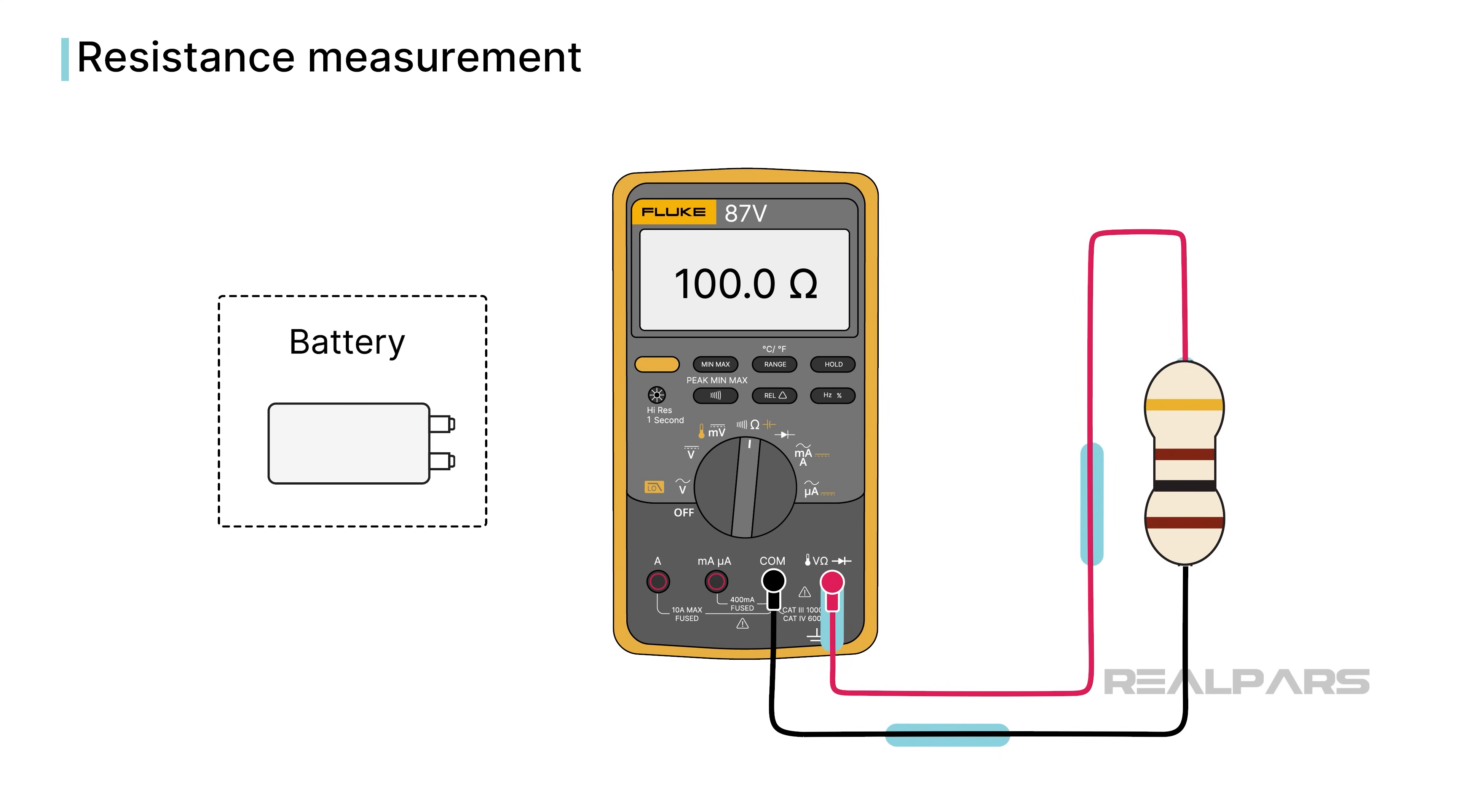Every DMM has a battery that provides this voltage and powers the internal electronics. The device under test must be the only device connected to the ohmmeter, and no circuit power must be applied.